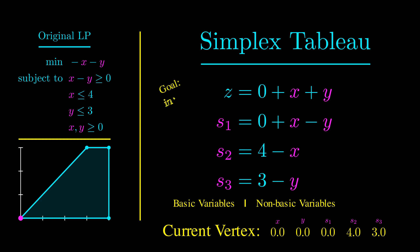Our goal is to increase z, so we need to increase one of the non-basic variables. Let's try to increase x. How much can we increase x while still remaining feasible? Remember that all variables have to be non-negative. We can't increase x past 4, otherwise s2 becomes negative. We can also see this graphically, that we shoot outside of the feasible region.